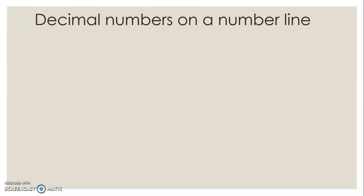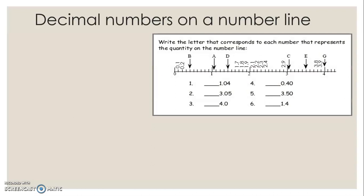Decimal numbers on a number line. This is a number line from 0 to 4. We are going to write the letter that corresponds to each number representing the quantity on the number line. On this number line, we are jumping by 0.1: 0, 0.1, 0.2, till 1, then 1.1, 1.2, 1.8, 1.9, 2, 2.1, 2.2, till 2.9, then 3, 3.1, 3.2, till 3.8, 3.9, 4. We are going to write the letters A, B, C, D, E, and G beside the given numbers.